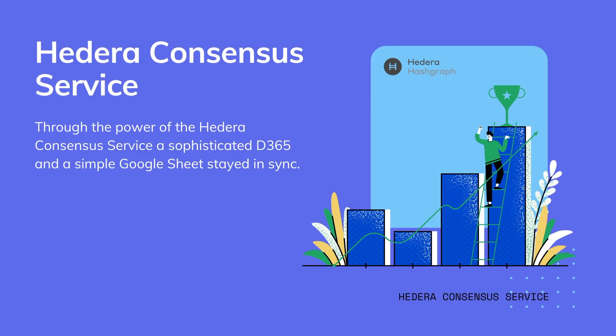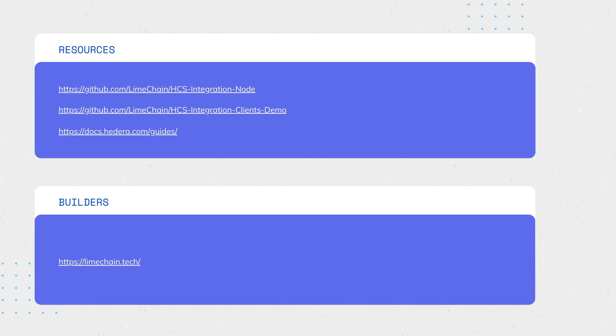As you have seen, the power of the Hedera Consensus Service can be used to power up complex enterprise-to-enterprise business processes. Alice and Bob have managed to keep their record keeping books in sync regardless of the sophistication of their ERP systems. We'll see you next time. Thank you.